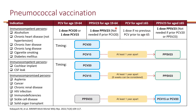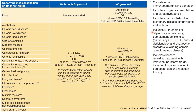If they turn 65 and have not received the vaccine, it is recommended to get one dose of PCV15 or PCV20, just as before. If they previously received PCV13, they still need PPSV23 — or they can get PCV20 once they turn 65. A summary table covering all of these recommendations is available for review.